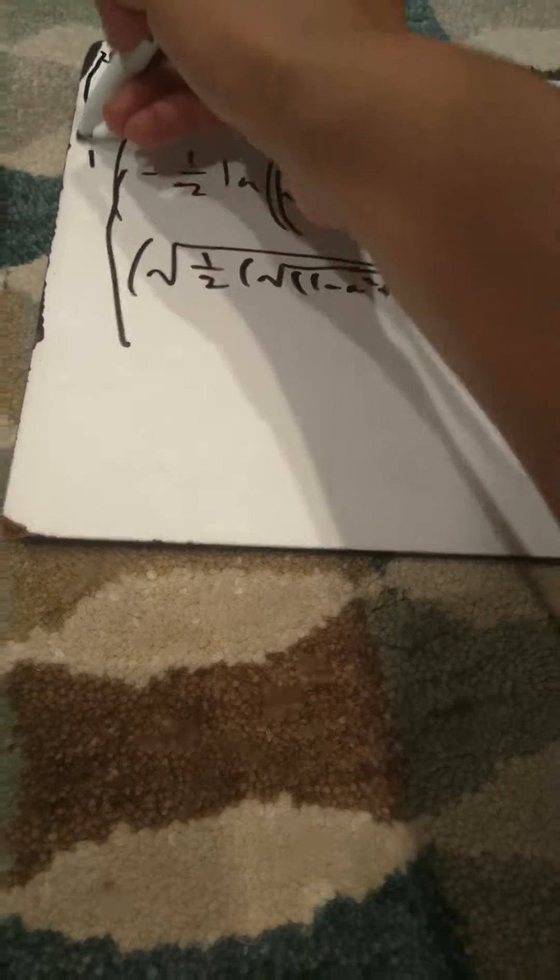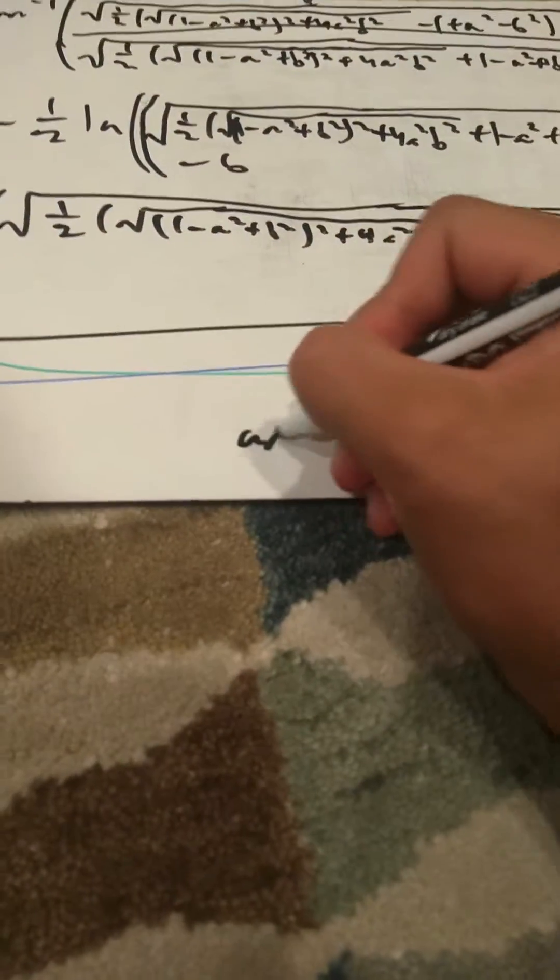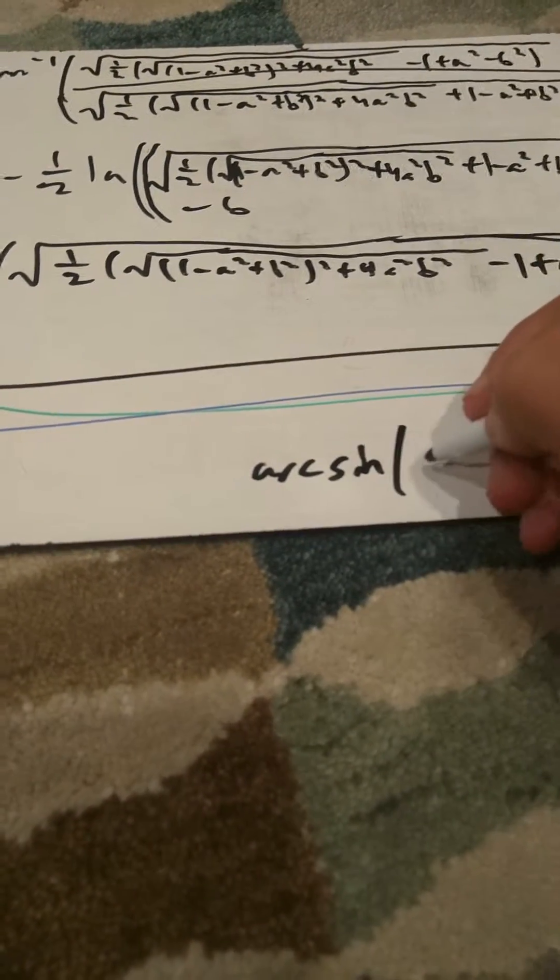We are done. I'll box this. We are done for the arcsine of a complex number a plus bi. That's it.